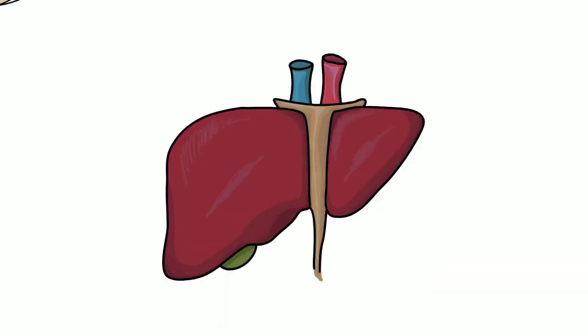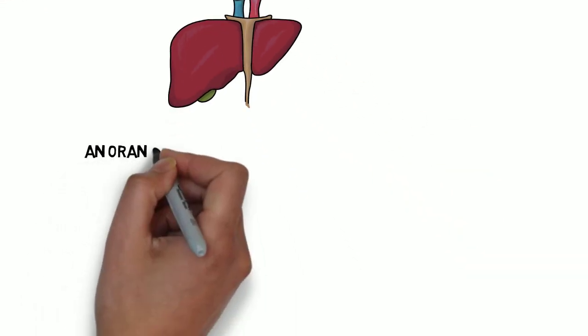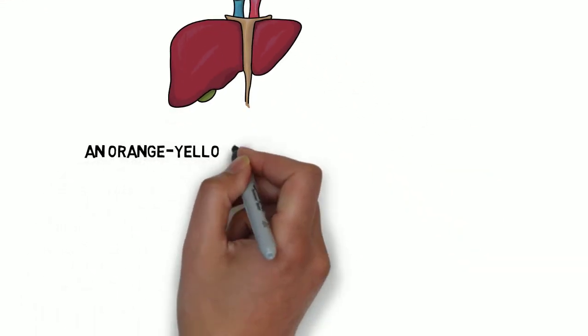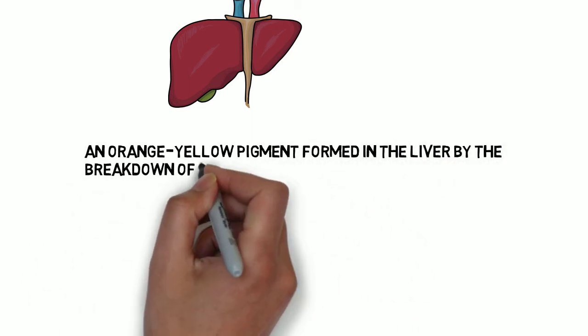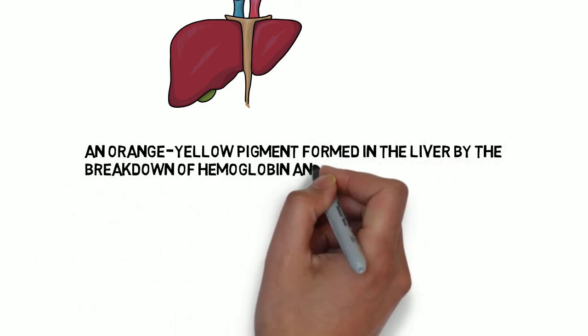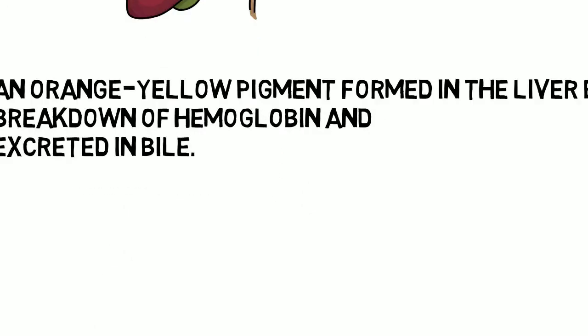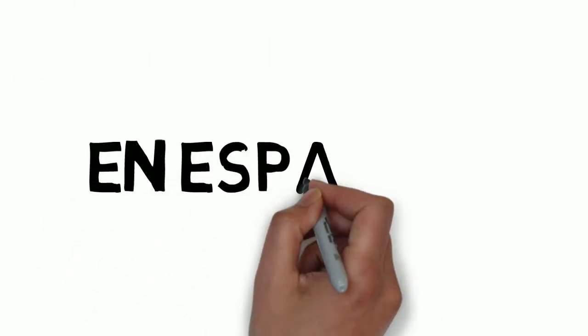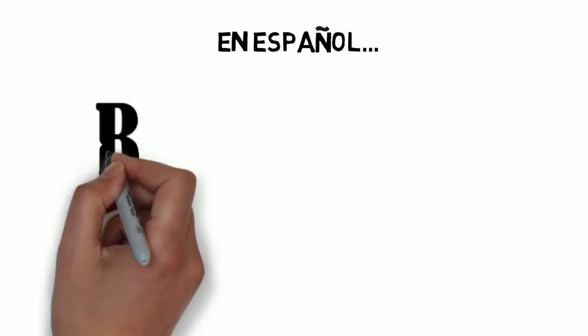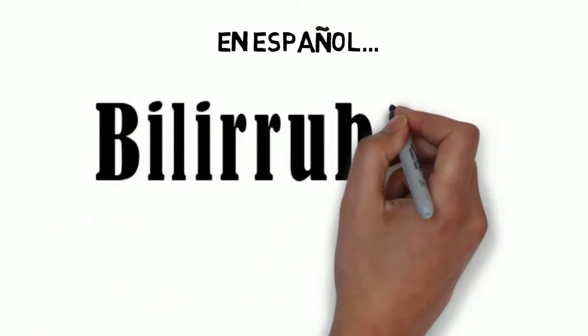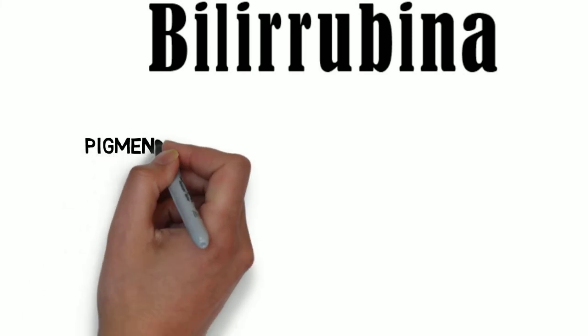Sixth word: bilirubin — an orange-yellow pigment formed in the liver by the breakdown of hemoglobin and is excreted in bile. En español, sexta palabra, bilirrubina: pigmento amarillo que se encuentra en la bilis y se forma por la degradación de hemoglobina.